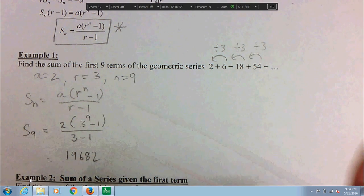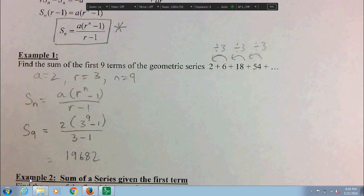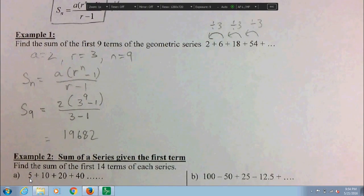I've put it into my calculator and I got 19,682, and that would be the sum of the first nine terms.